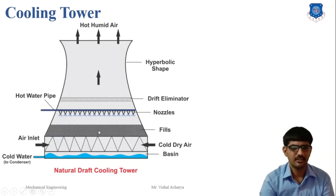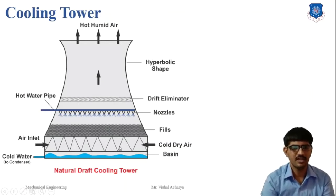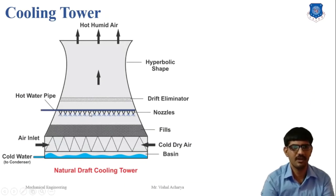The cold water droplets fall downward and collect in the basin. The cold water is then supplied to the condenser by the help of a centrifugal pump. This is the basic principle of all cooling towers.